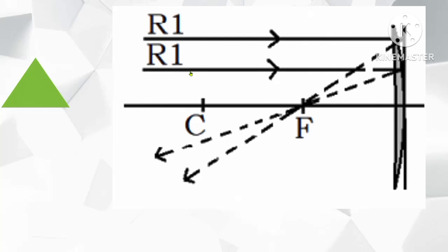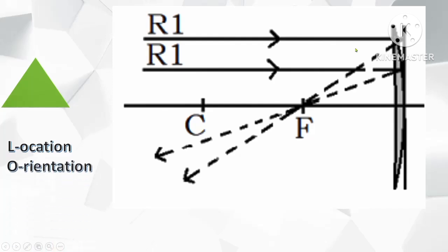What would be the characteristics of the image formed if an object is placed at infinity? When we say infinity, the object is located very far from the mirror. This mirror is a concave mirror. Let us remember the following characteristics in terms of location, orientation, size, and type of image. In this situation, we're going to use only one type of ray: ray 1.